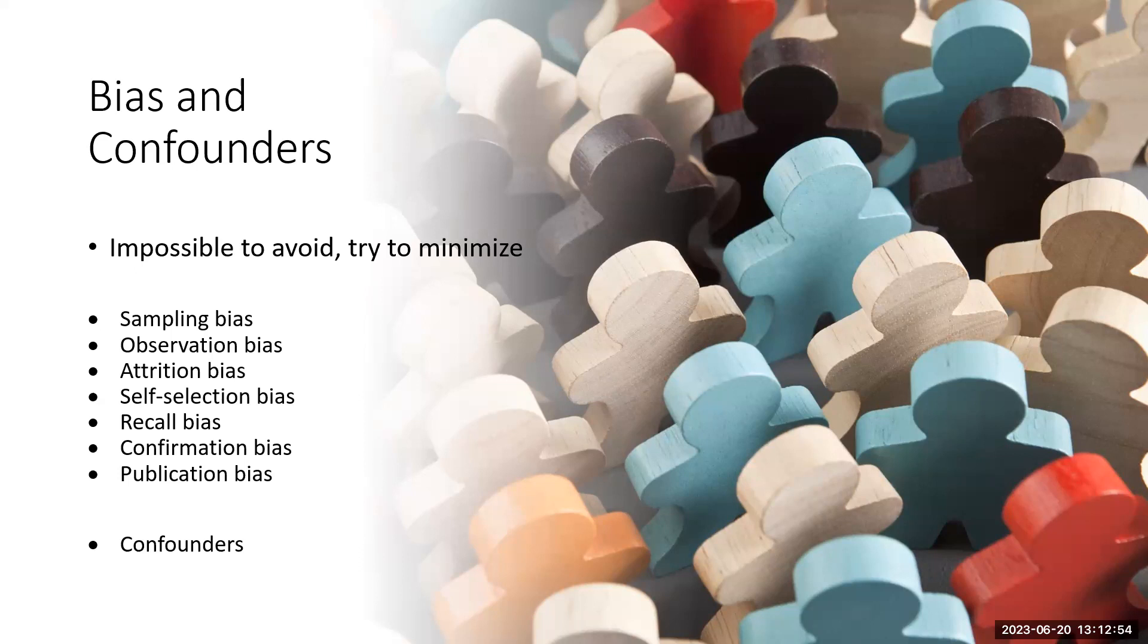Observation bias is pretty self-explanatory. Participants in a study aware that they're being observed consciously or unconsciously alter their behavior or answers. They might know the answer that they think you want, or somebody's looking at them through a glass, so they might just behave other than they would normally.